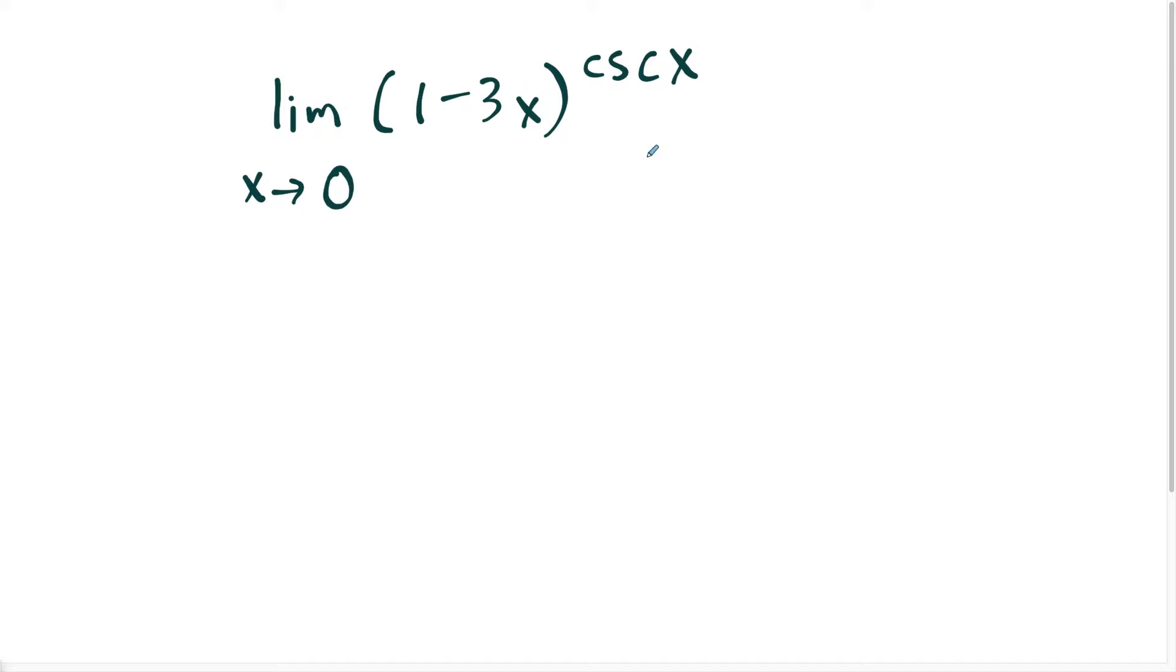For a question like this, we could just try plugging in right away. But the thought process here is that if I just plug zero in for our x's, I'm going to wind up with one to the cosecant of zero. And if we're mindful here of the idea that cosecant of x is the same thing as one over sine x. And if you think about sine of zero is equal to zero,